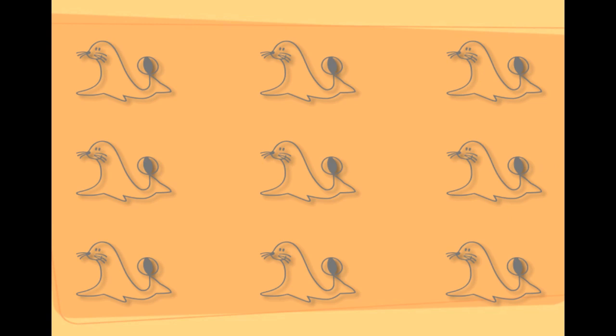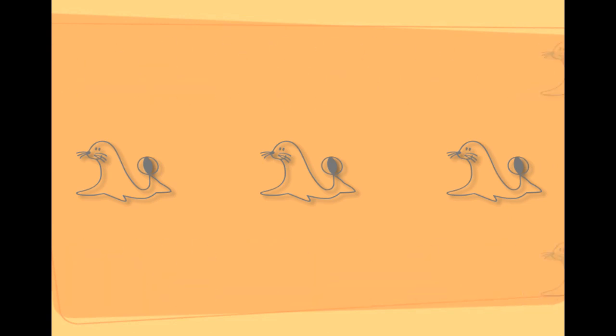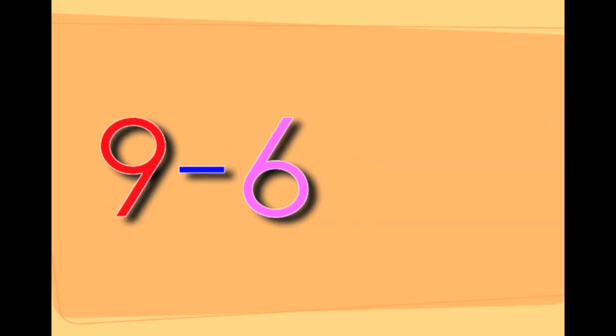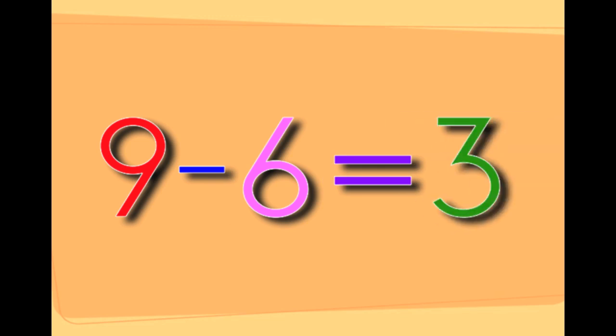There are nine seals. If you take six seals away from the nine seals, it leaves you with three seals. That's nine minus six equals three.